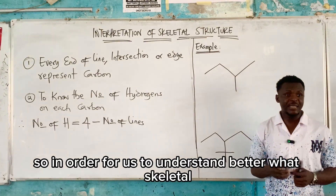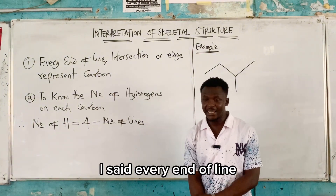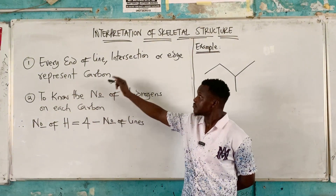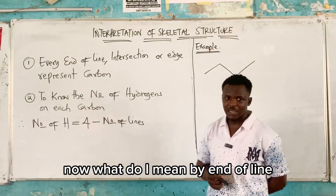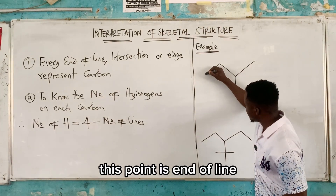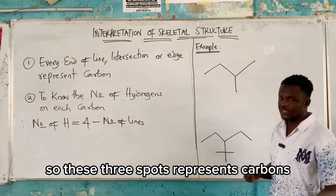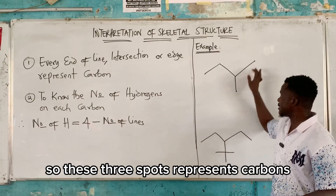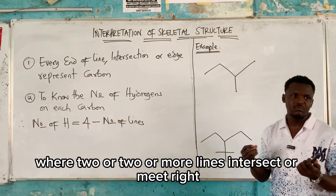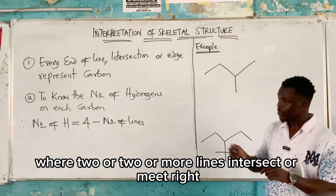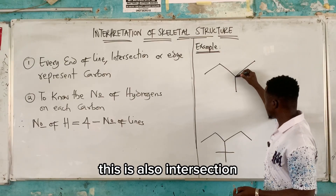In skeletal structures, you're not going to see hydrogens, but the hydrogens will be inside of it. For you to understand how to name skeletal structure, you must understand that these lines stand for bonds and these points stand for carbon. Every end of line, intersection, or edge represents carbon. The end of lines are these points here, and where two or more lines intersect or meet is the intersection.